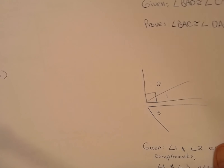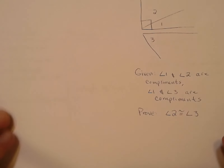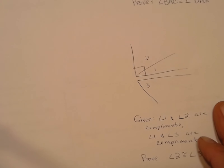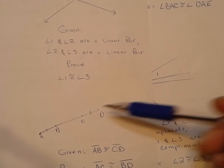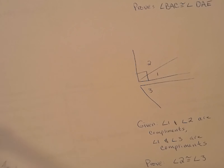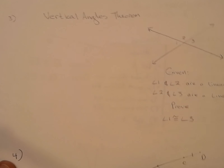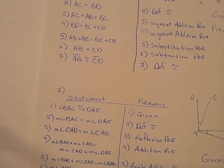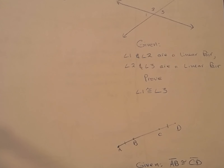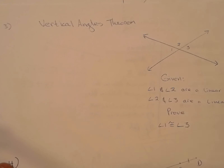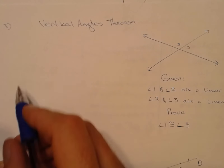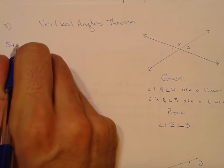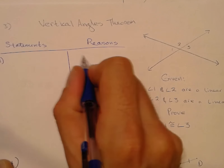Some of the other answers will be posted to Its Learning as a PDF. Problem three is similar to six, five is very similar to number one, and four is very similar to two. So by doing half of these, you can walk your way through the others. We'll start with formatting — statements, reasons, two columns, corresponding numbers.